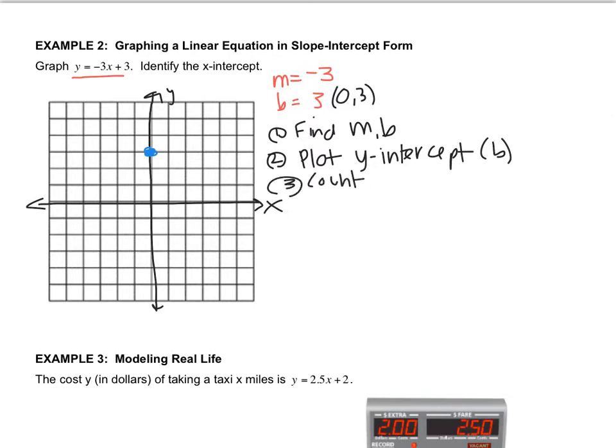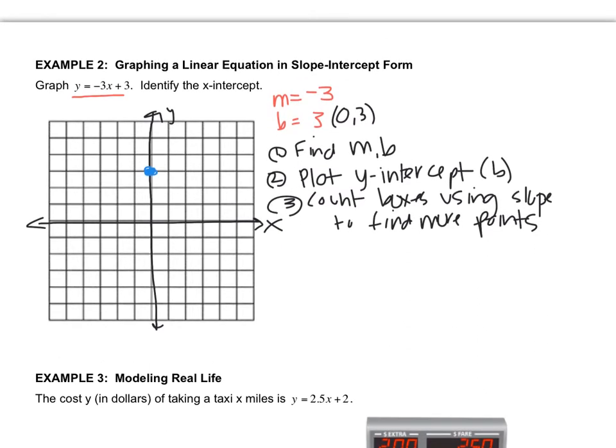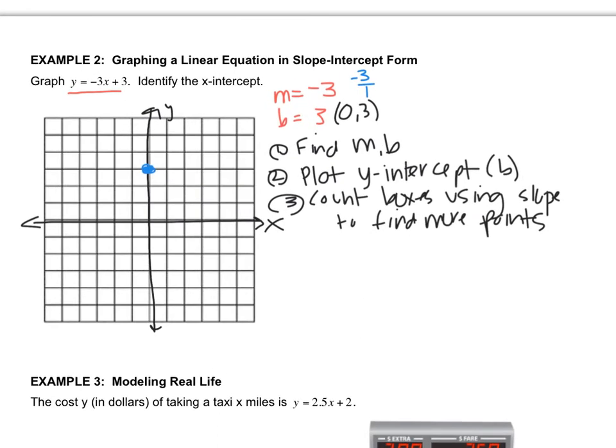Number 3 is to count boxes using the slope to find more points. What does negative 3 mean? Negative 3 means, as a slope, negative 3 over 1. Remember, slope is usually written as a fraction. If you recall back to our slope lesson, that meant down 3, right 1. From this point right here, I'm going to go down 3, right 1, and put a dot. Now I'll do it again, down 3, right 1, put a dot. Let's do it one more time, down 3, right 1, put a dot. Perfect, we've got a line.